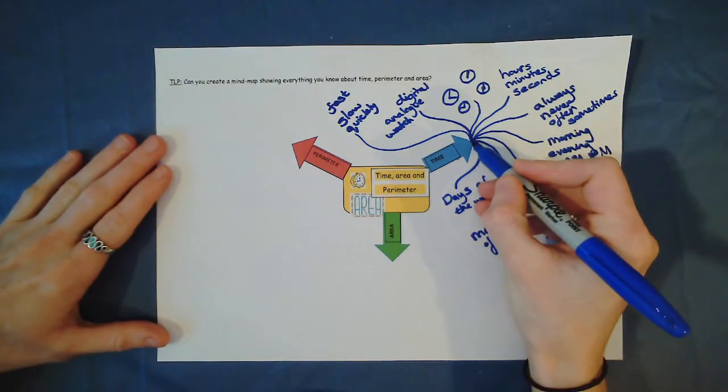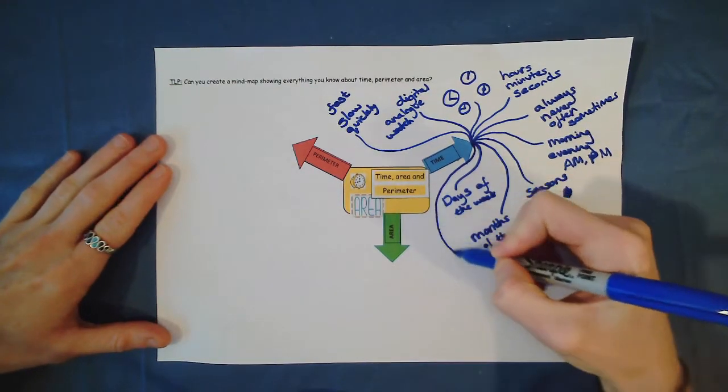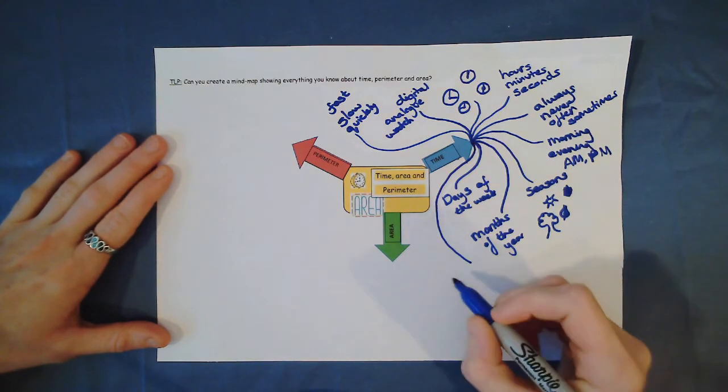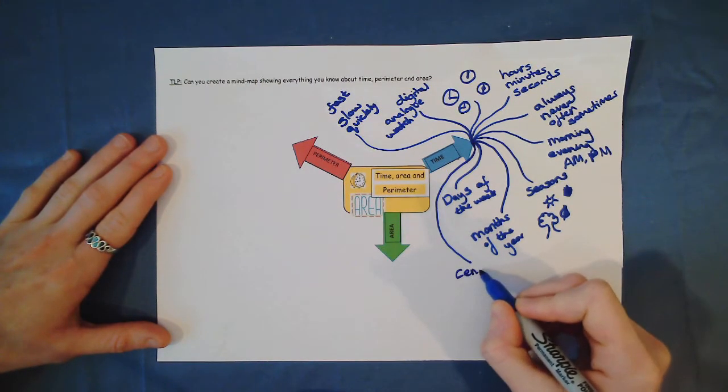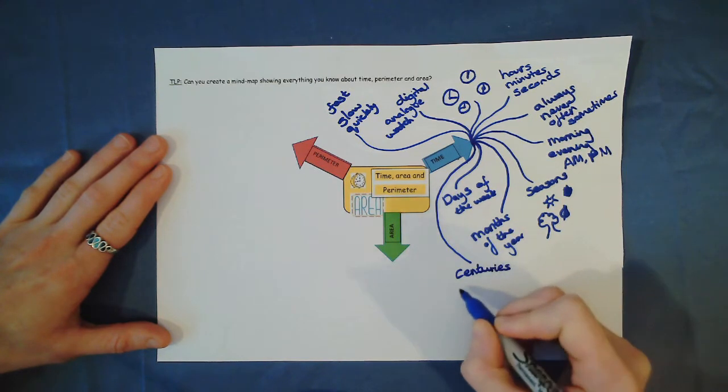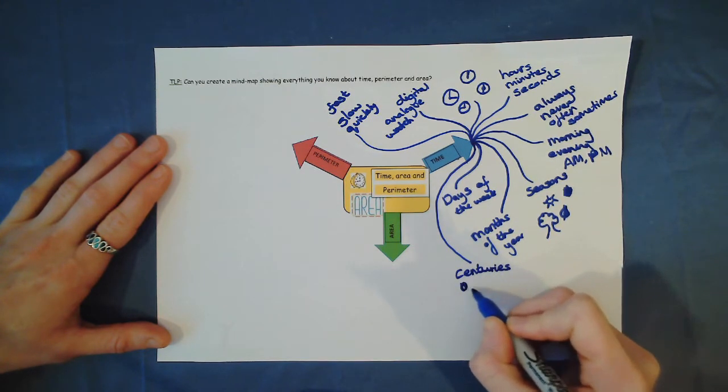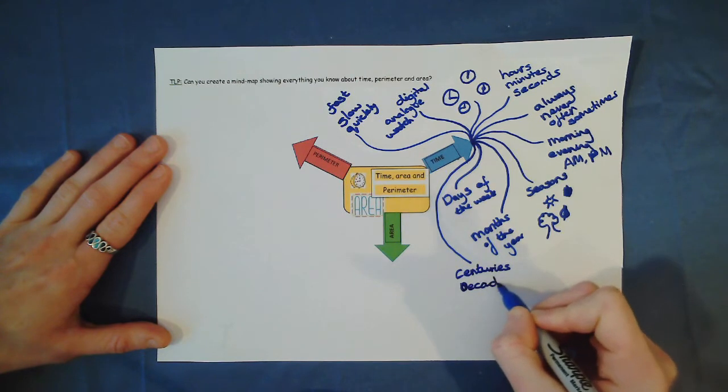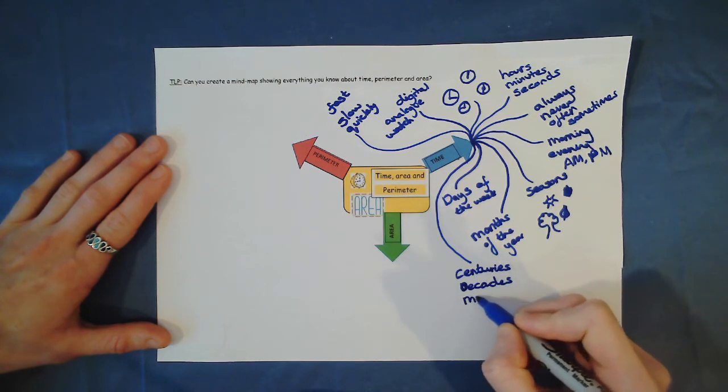And then we've got the way we measure the passing of years. So we could have centuries, decades, a millennium.